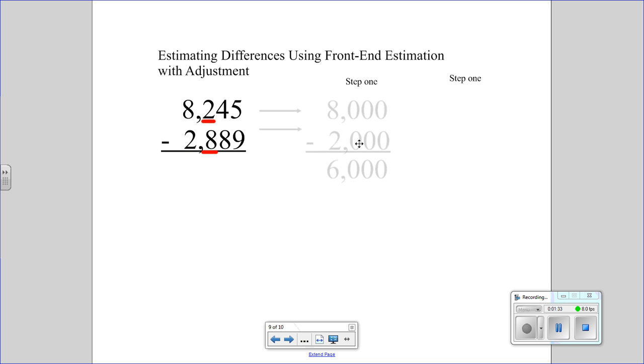Then when you go to – let me just get that back in there. This is where it gets a little tricky. Normally, we would be trying to take 800 from 200.